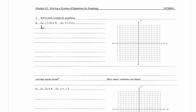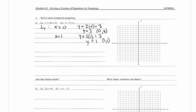For line 1, I'm going to plug in x equals 0, so I have y plus 2 times 0 is equal to 3. So y is equal to 3, which means one point on this line is (0, 3). Then we're going to plug in x equals 1, so we have y plus 2 times 1 is equal to 3, giving y equals 1. So the points on L1 are (0, 3) and (1, 1).